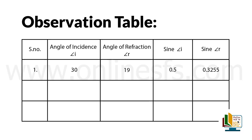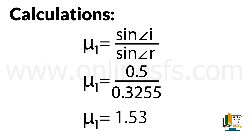This is the observation table. Yahan par hum apni first observation ki readings note down karenge. Angle I equals to 30 degrees, angle R equals to 19 degrees. Sine of angle I, yani sin 30, that is 0.5, and similarly sine of angle R, yani sin 19 degrees, that is 0.325. Ab refractive index calculate karenge: mu 1 equals to sine angle I upon sine angle R equals to 0.5 upon 0.325, and the refractive index is found to be 1.53.